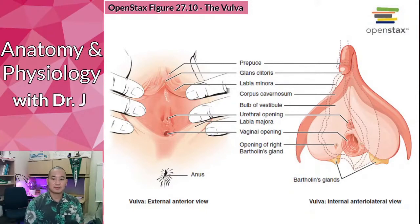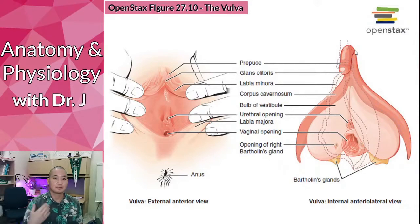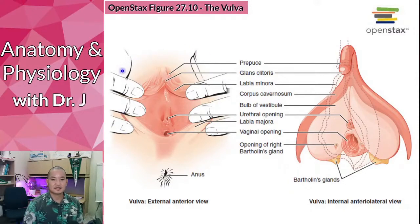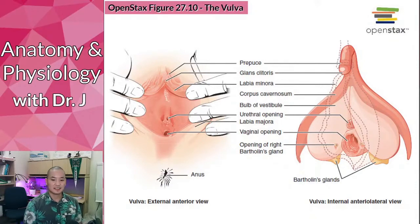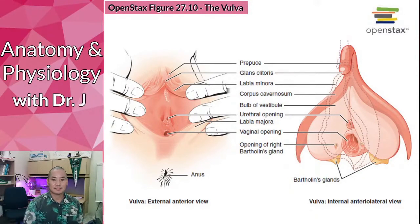The clitoris is external, but it also has an internal portion within the body. All the external genitalia collectively are called the vulva. A common misconception is using vulva interchangeably with vagina. The vagina specifically refers to the canal between the vaginal opening and the cervix, whereas the vulva includes the vagina and all these external surfaces.